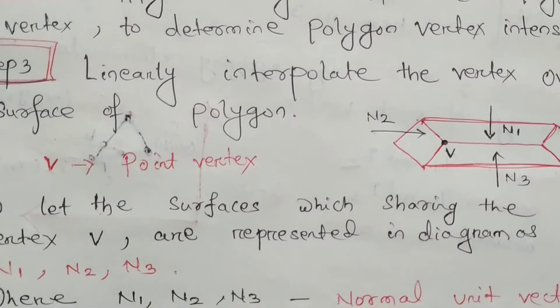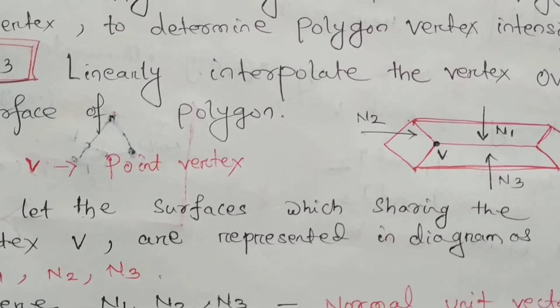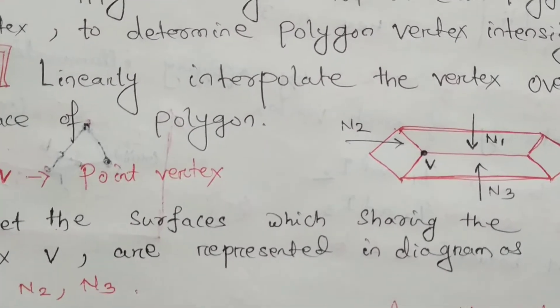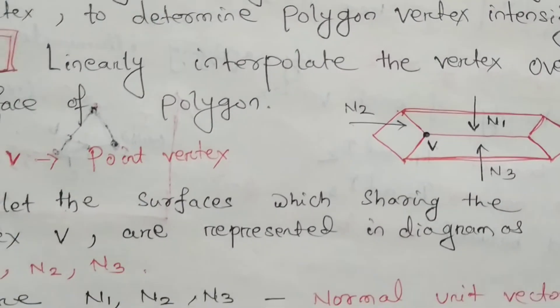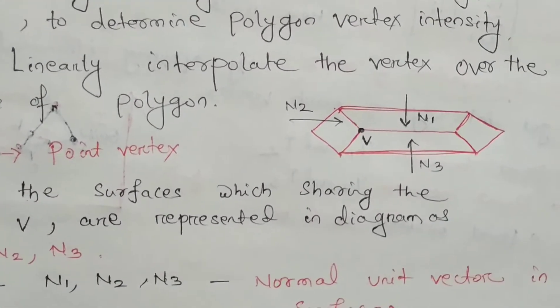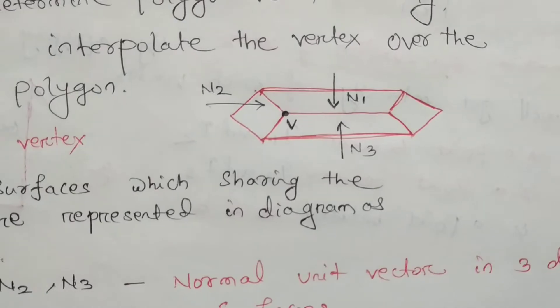Now let the surfaces which are sharing the vertex V be represented in the diagram as N1, N2 and N3. These three are sharing the vertex V, where N1, N2, and N3 are the normal unit vectors in three different surfaces.